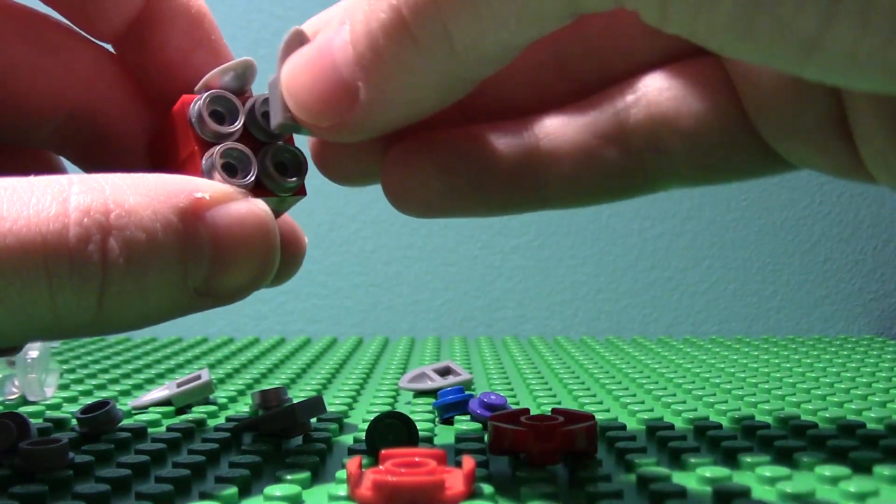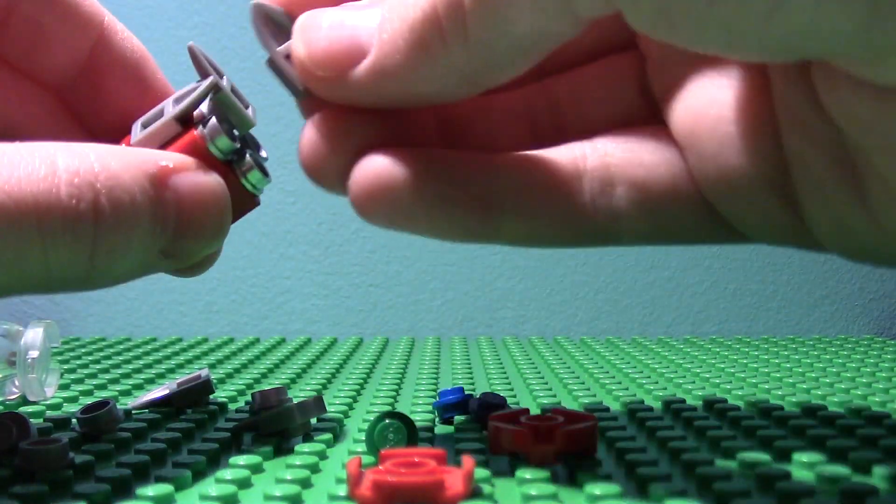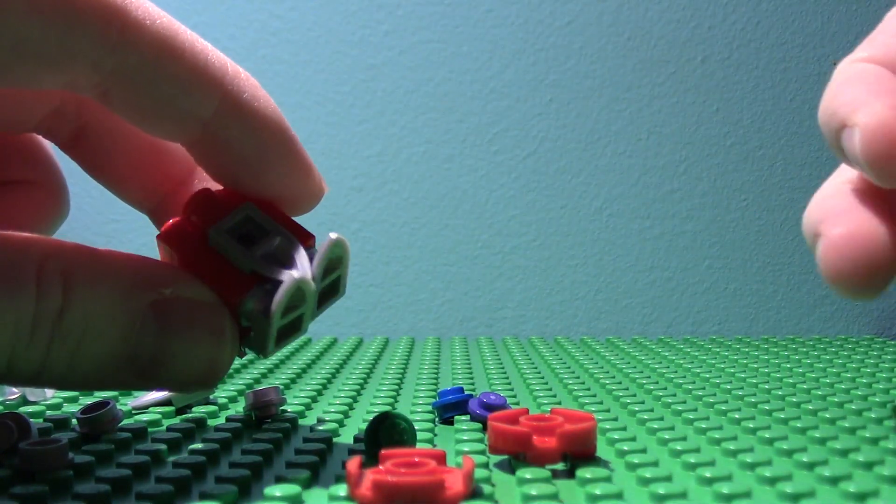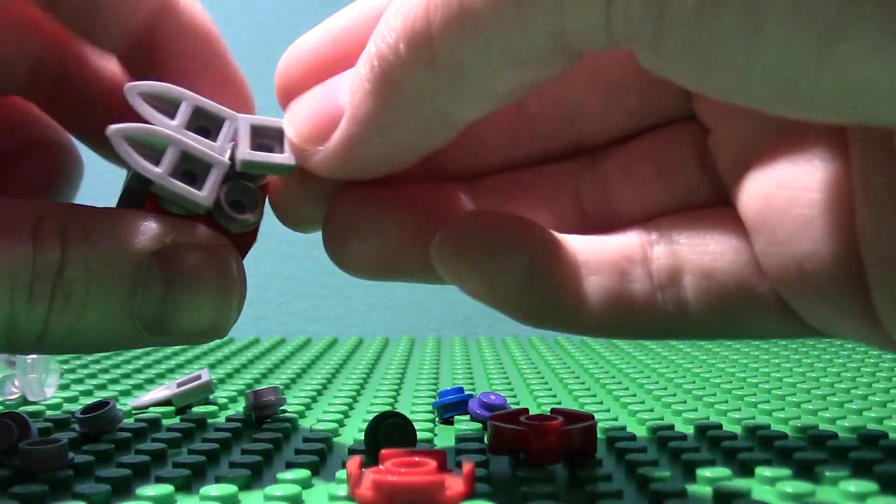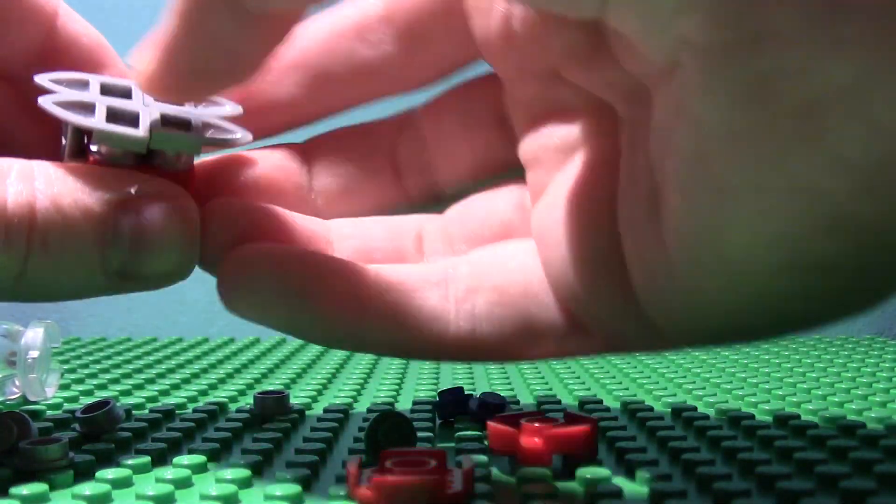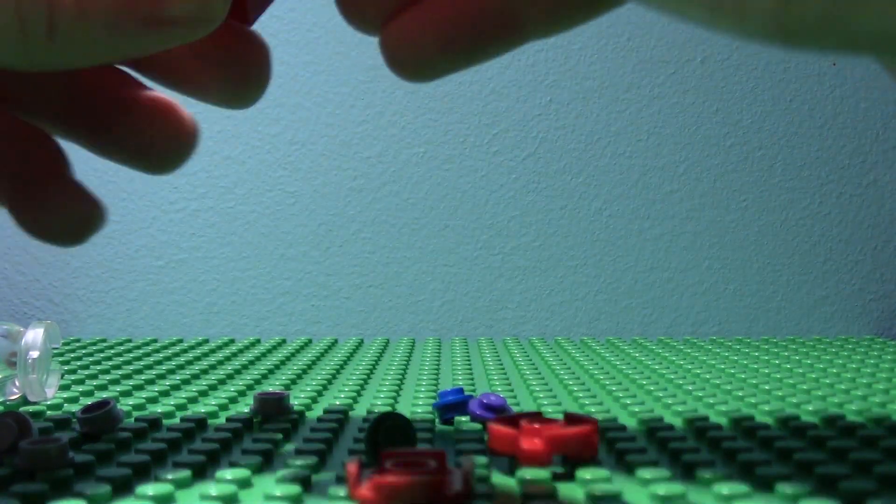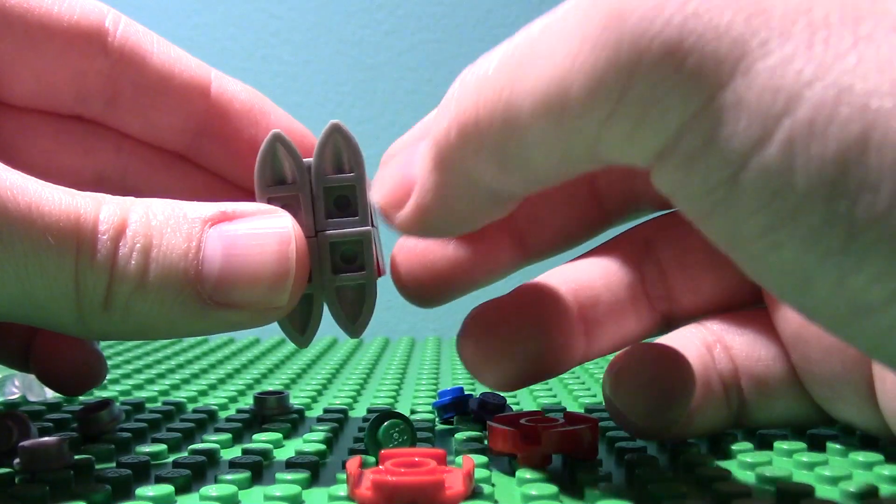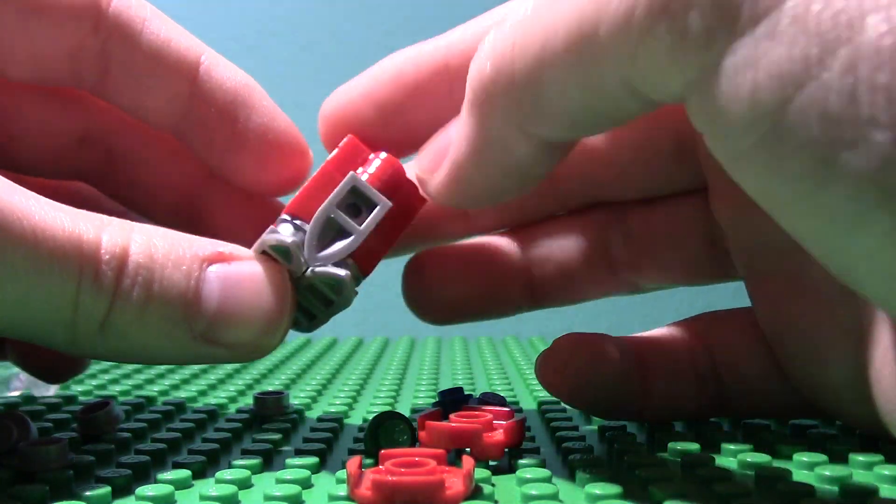Now you're going to put these dragon tooth pieces there and then two on the back. The ones in the front aren't going to attach a hundred percent well because of the tooth there, it kind of sticks over.